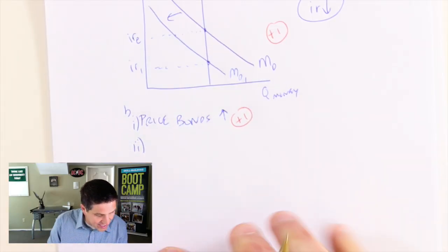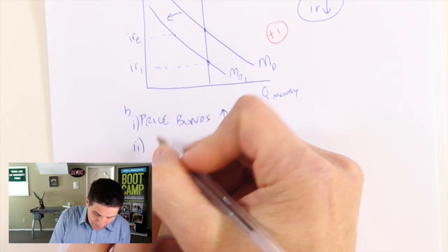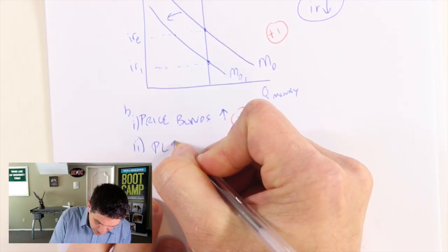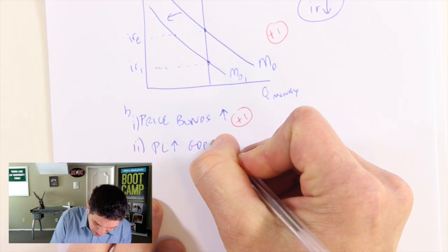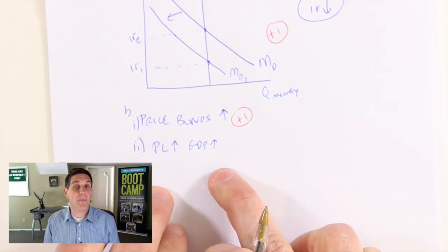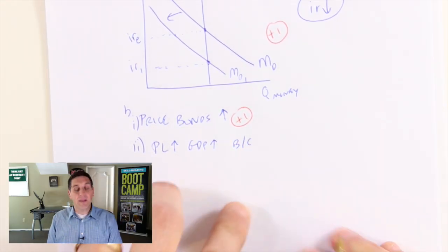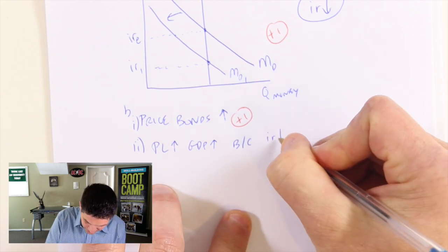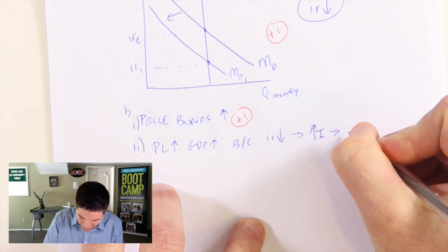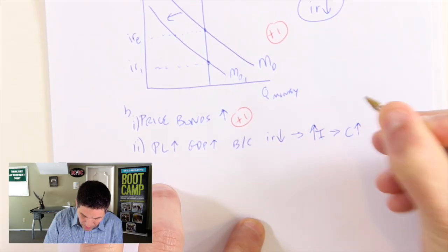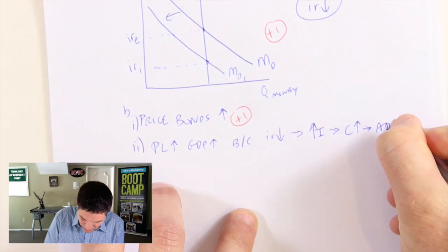In part B(ii), it asks what happens to the price level and real income—and explain. The price level will increase and GDP will increase. But stating that doesn't earn the point—you have to explain why. Lower interest rates, which we said will happen, cause investment and consumer spending to go up. You can say aggregate demand is going to increase. That's what happens.